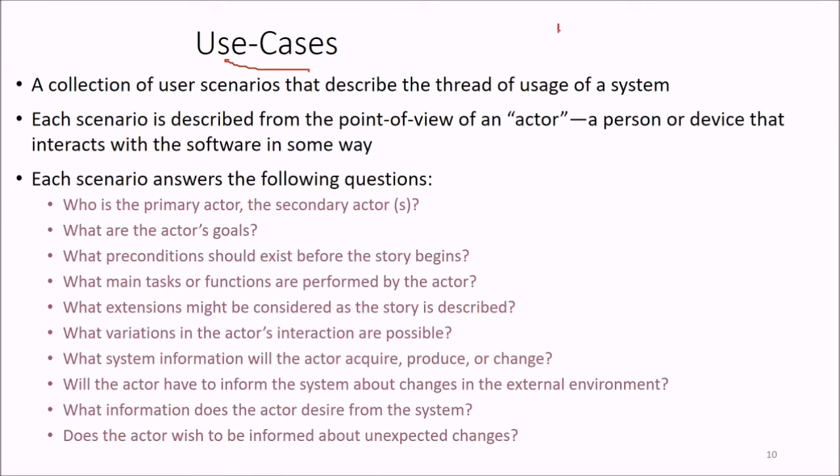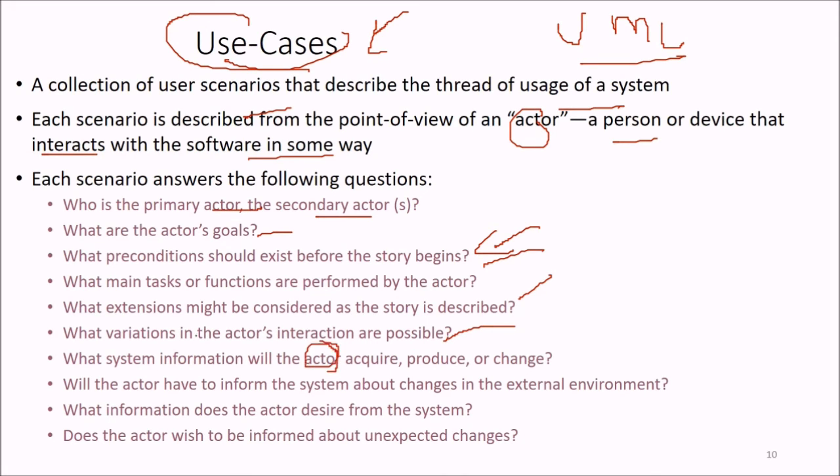Use cases are very important because UML is now used not only for object-oriented design but also to present requirements. They're a collection of user scenarios that describe the thread of usage. Each scenario is described from the actor's point of view - a person or device that interacts with the software. Each scenario answers: who is primary and secondary actor? What are the actor's goals? What preconditions should exist? What tasks are performed? What extensions might be considered? What variations are possible? What system information will be acquired, produced, or changed? Will the actor inform the system about changes? What information does the actor desire and wish to be informed about?